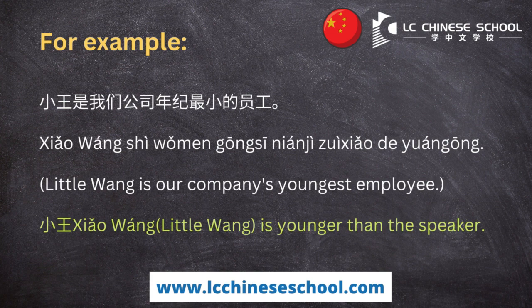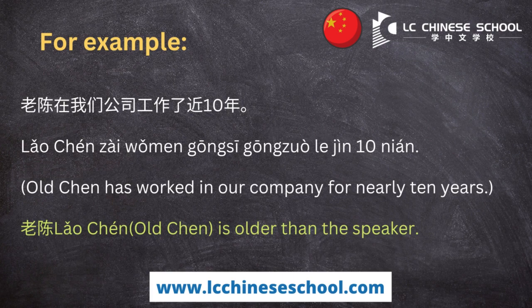小王 — here 小 (xiǎo) and 王 together form 小王, meaning Little Wang is younger than the speaker. 老陈在我们公司工作了近十年 — Old Chen has worked in our company for nearly ten years.